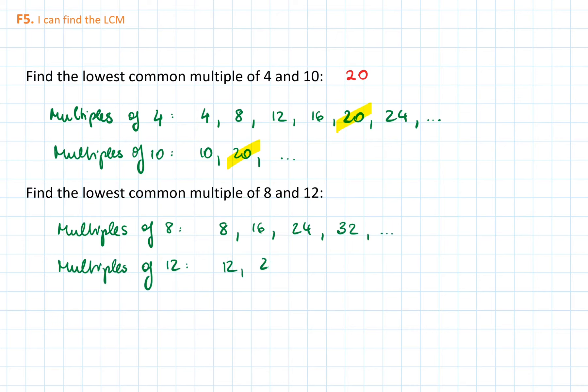Now pause the video and try to work out the lowest common multiple of 8 and 12. As usual, we start with listing the multiples of 8 and then the multiples of 12. After 24 we can stop listing because we notice that 24 is our answer, as it appears in both lists. So the lowest common multiple of 8 and 12 is 24.